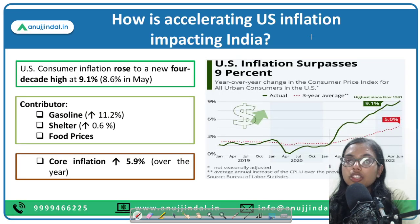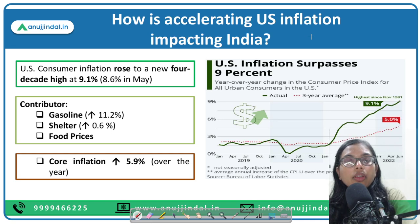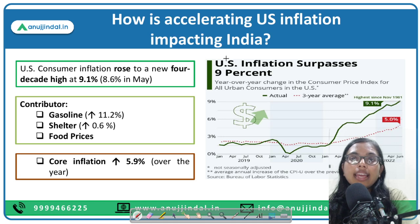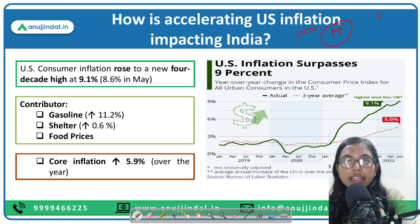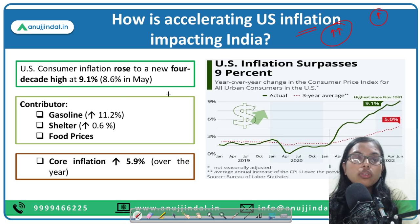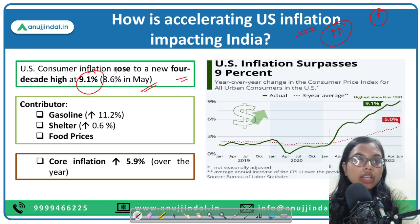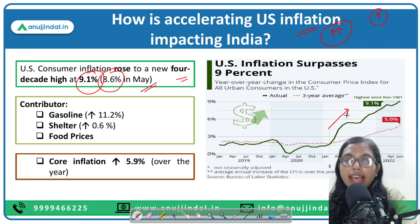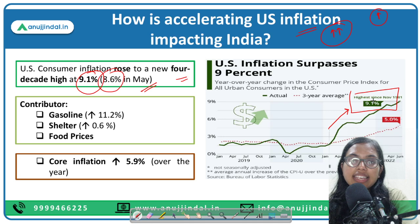So let's get started. The question is: how is accelerating US inflation impacting India? If you are following the news daily, you must have heard that inflation in the US has been increasing exorbitantly. The US consumer inflation rose to a four-decade high — a 40-year high — at 9.1 percent. Last month, in May 2022, it was 8.6 percent. So month after month, inflation in the US has been increasing, and now it has reached a 40-year high of 9.1 percent.